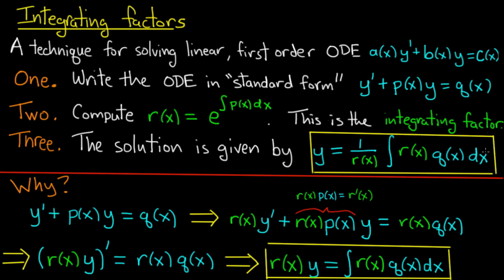It comes from multiplying by the integrating factor, using that to fold up the equation on the left-hand side into a derivative of a product, then solving for y by integrating and dividing by r(x).